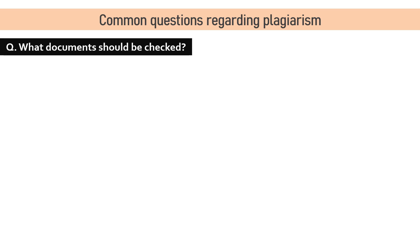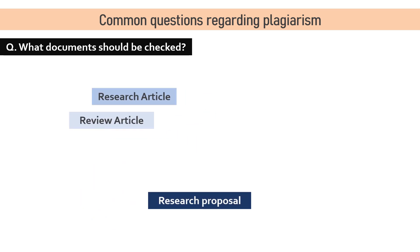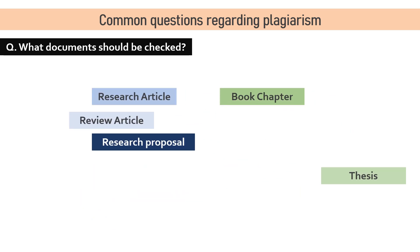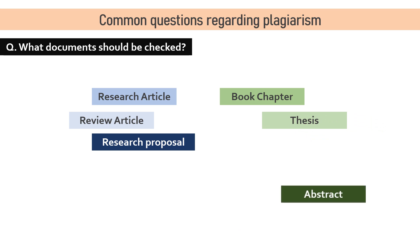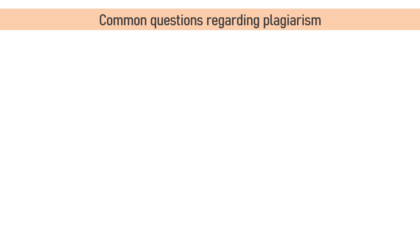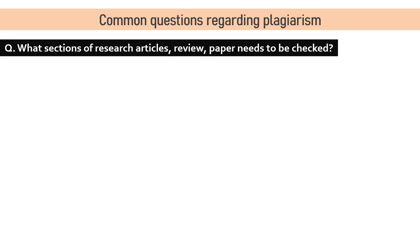What documents need to be checked for plagiarism? Every document — whether it is a research article, review paper, research proposal, book chapter, undergraduate or PhD thesis, or abstract — should be checked for plagiarism. The next common question is: what sections of the manuscript are included and checked for plagiarism?